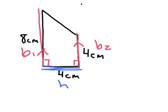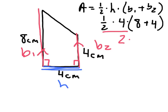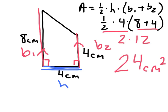So the area equals one-half times the height times the sum of the bases. That's one-half times the height of four, times the sum of eight plus four. Half of four is two, times what's in the parentheses — twelve. Two times twelve is twenty-four centimeters squared.